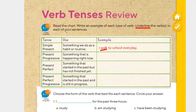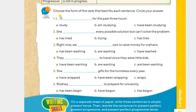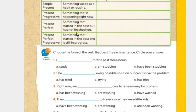Let's continue with exercise number two. Exercise number two says: choose the form of the verb that best fits each sentence. Circle your answer. What could be the best form of the verb for this sentence: 'I ___ for the past three hours'? The options are: I study, I am studying, or I have been studying. We have to choose the correct form according to the context of the sentence and these descriptions of the tenses.